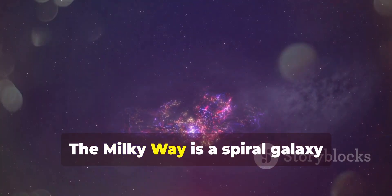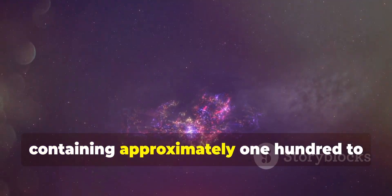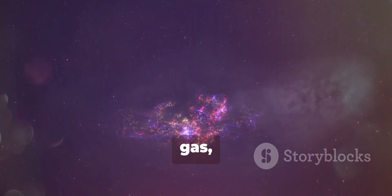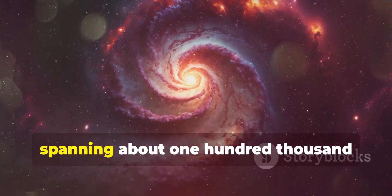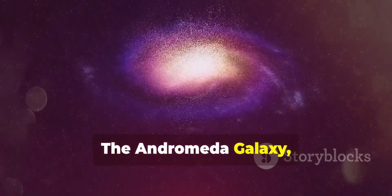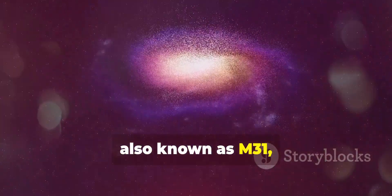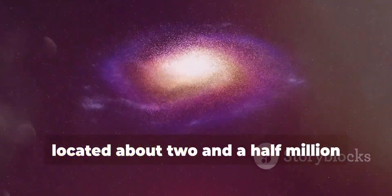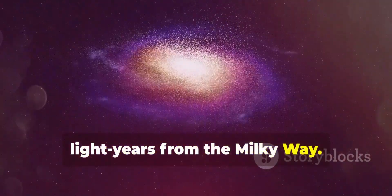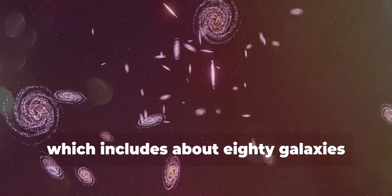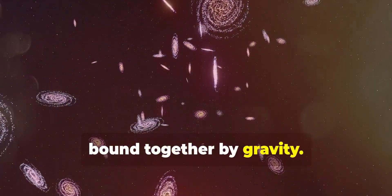The Milky Way is a spiral galaxy containing approximately 100 to 400 billion stars, gas, dust and dark matter, spanning about 100,000 light-years in diameter. The Andromeda galaxy, also known as M31, is a slightly larger spiral galaxy located about 2.5 million light-years from the Milky Way. Both galaxies are part of the local group, which includes about 80 galaxies bound together by gravity.